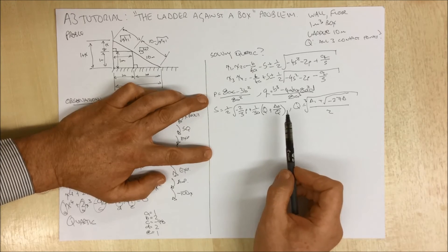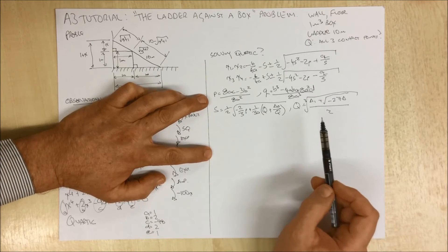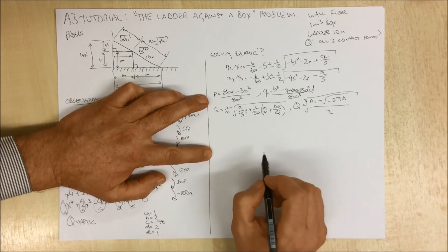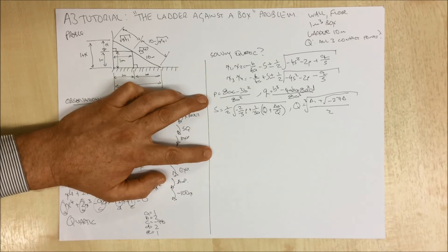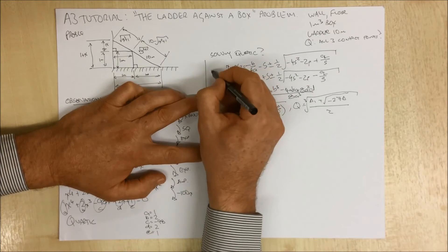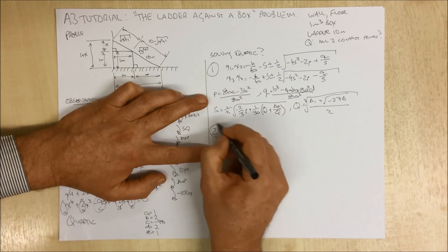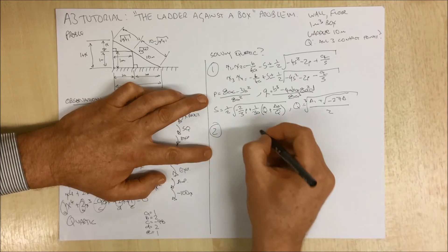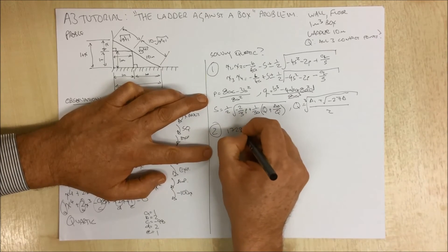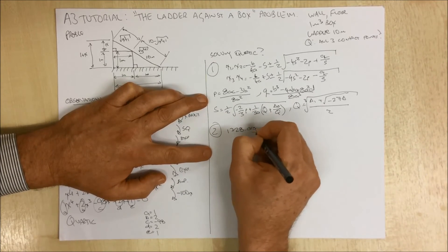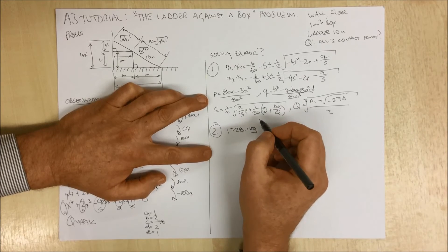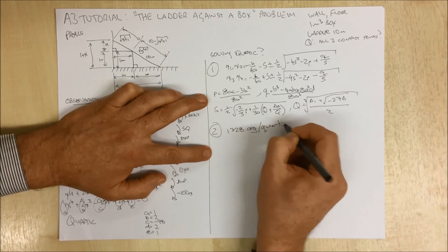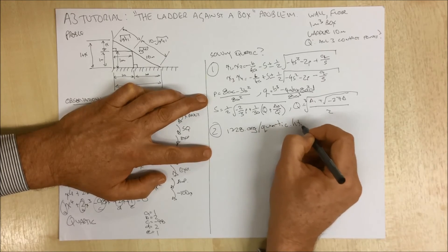Now I'm not going to do that simply because I don't have enough paper and we've all got better things to do with our time. So a much easier way is to simply do it by going to an online calculator. The one that I used is 1728.org. And they have a quartic calculator, quartic.htm.